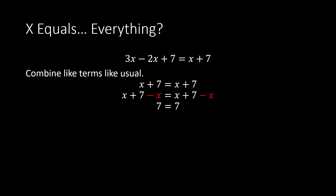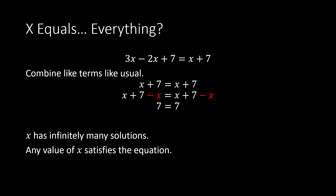The opposite case is when you do the same process and get a true statement, like 7 equals 7, with no x terms left. When you get a true statement with just numbers, x has infinitely many solutions — any value of x will satisfy the equation. To summarize: if the x terms cancel and you get a contradiction, there's no solution; if you get a true number statement, there are infinitely many solutions. That's all for now — hopefully you understood that.